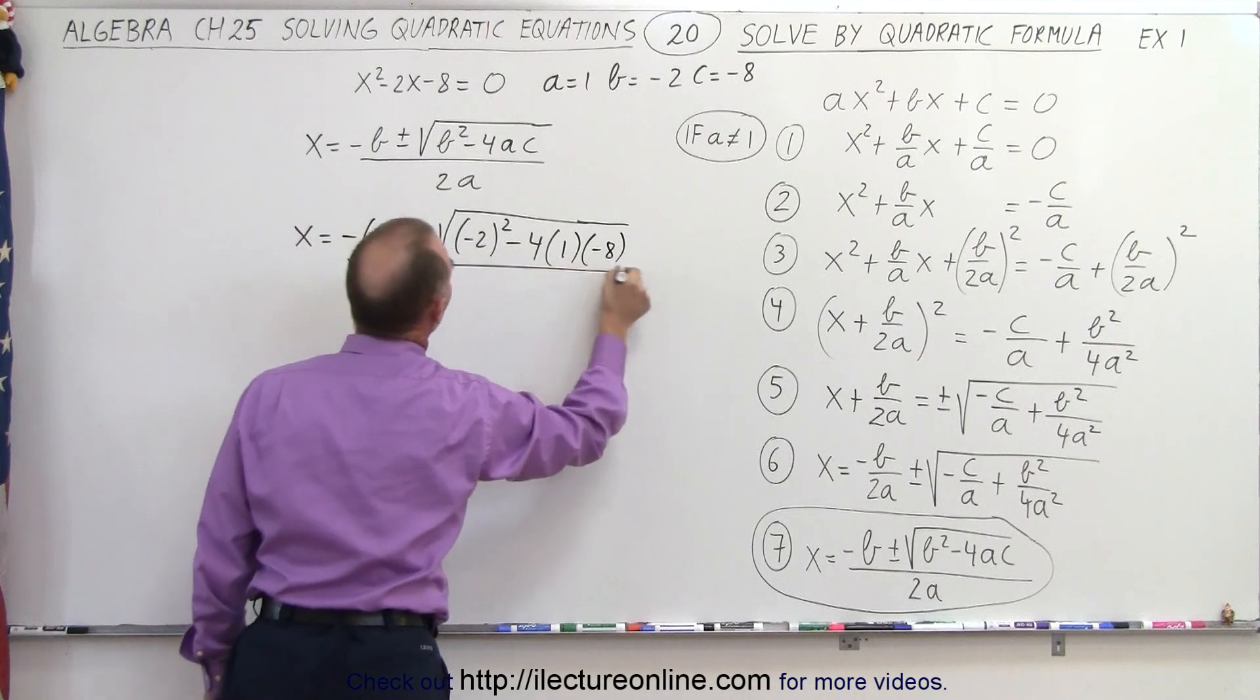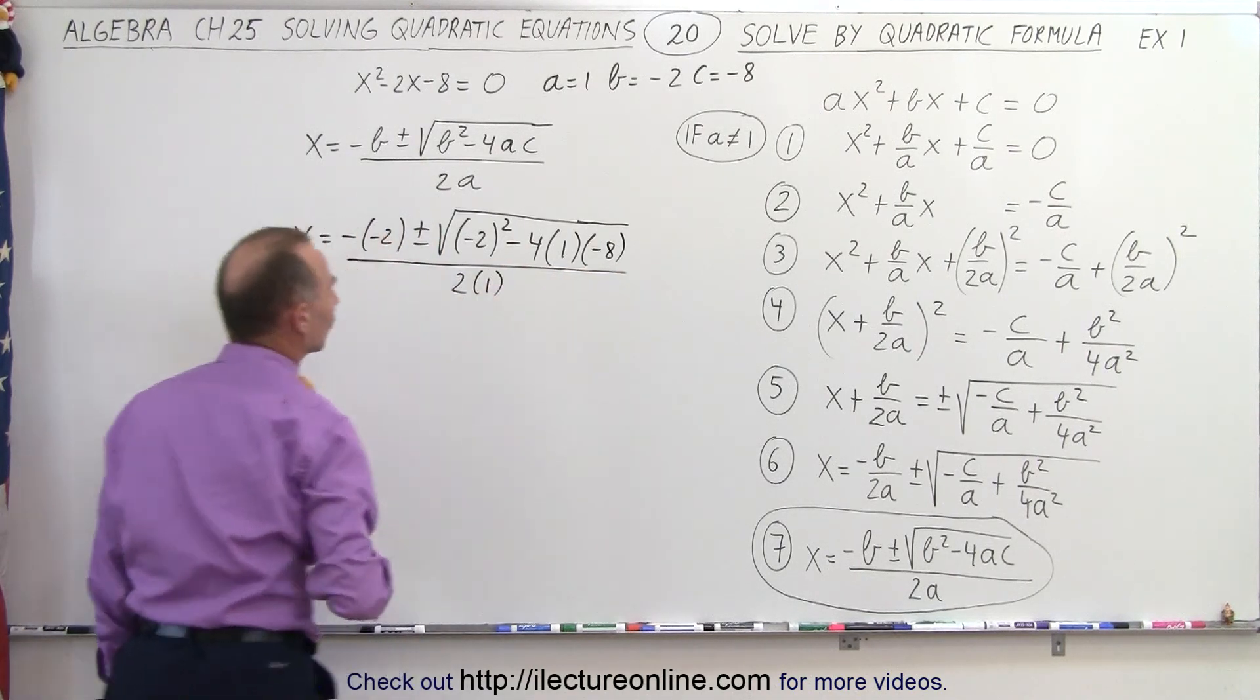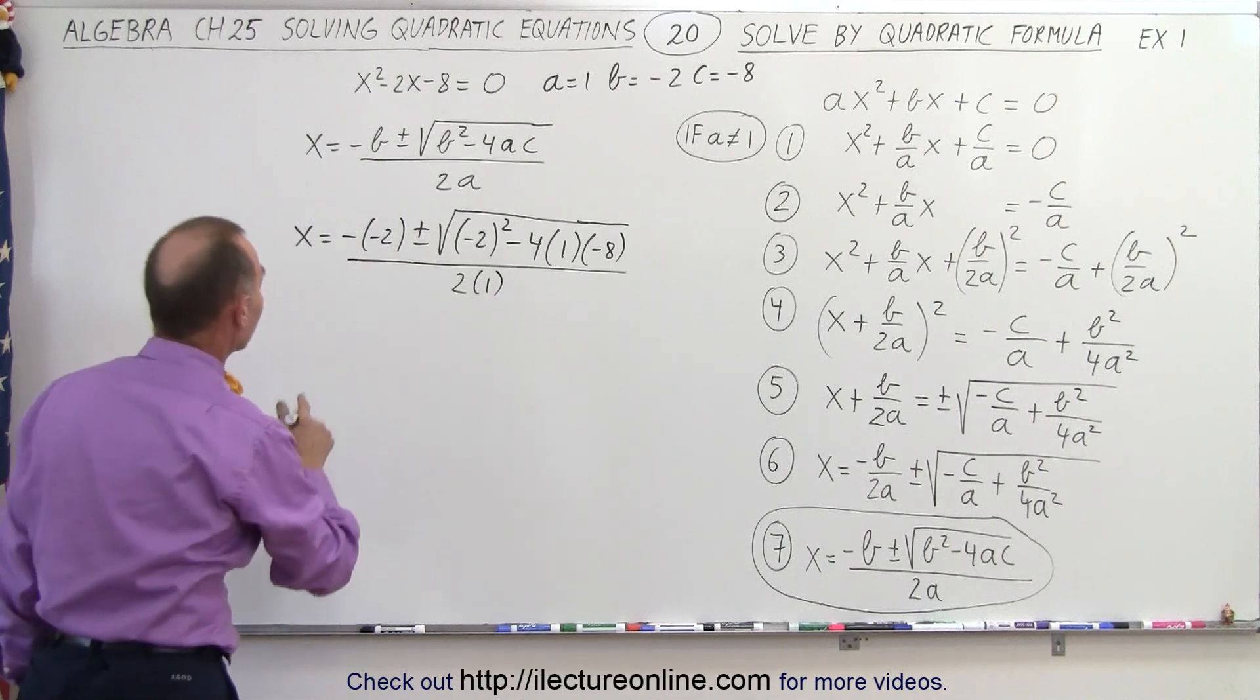all divided by 2 times A, which is 1. Now all we have to do is simplify that.